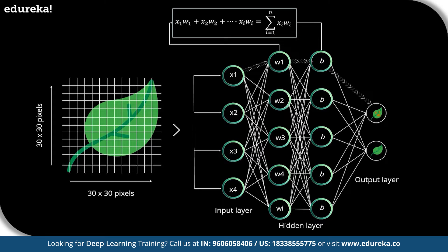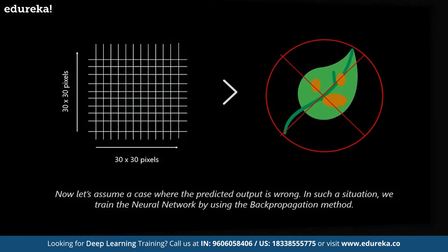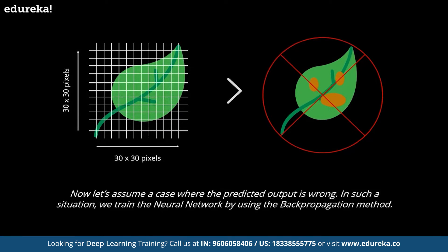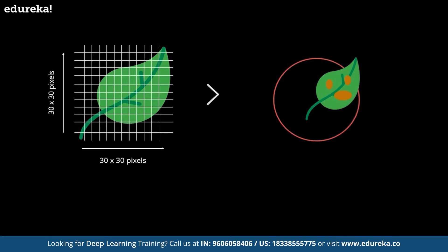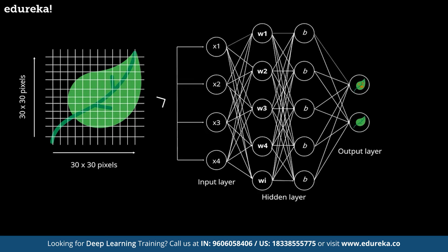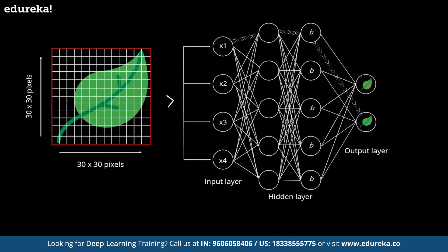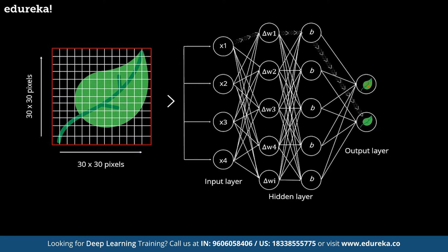At the output layer, a probability is derived which decides whether the data belongs to class A or class B. Now if the predicted output is wrong, we train the neural network using the back propagation method. Initially, while designing the neural network, we initialize weights to each input with some random values. These weights denote the importance of each input variable. By propagating backward and comparing the actual output to the predicted output, we can readjust the weights of each input to minimize the error, resulting in a more accurate output. This is exactly what back propagation means.